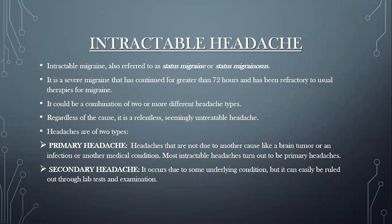Intractable headache is also known as status migraine or status migranosus. It is a very severe type of headache that continues for more than 72 hours and has been unresponsive to the standard therapies usually given for headaches or migraines. It could be a combination of two or more types of headaches — migraine type, tension type, cluster type, or anything.